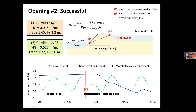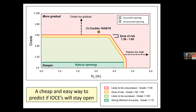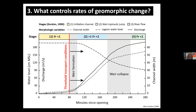The next opening the following day that worked had a steeper grade of one-in-37 and wave heights had dropped — so we would predict this one to work. The estuary was opened on a falling tide, which gave it that extra push to keep incising and widening during those early stages. So when Curtis failed, it plotted out in the area of 'do not open,' and the next day, because of those changes in wave height and grade, we shift it to the good spot where we'd predict it to be successful. This is still a work in progress, but essentially it's a cheap and easy way to predict if estuaries will stay open given those physical factors.